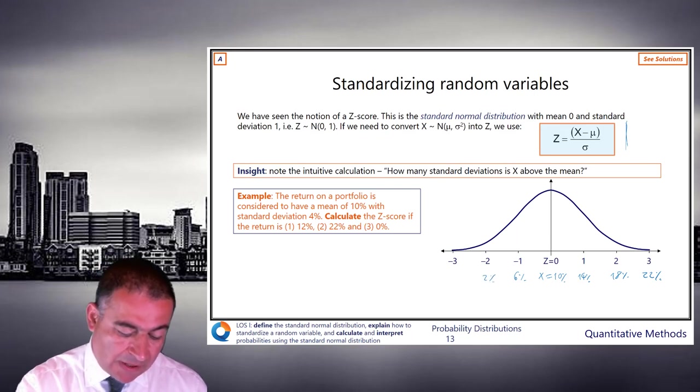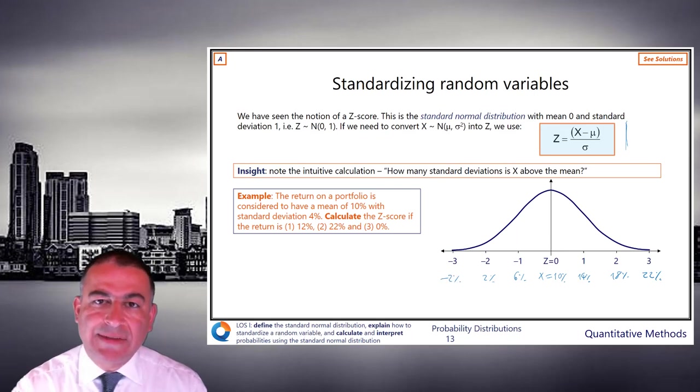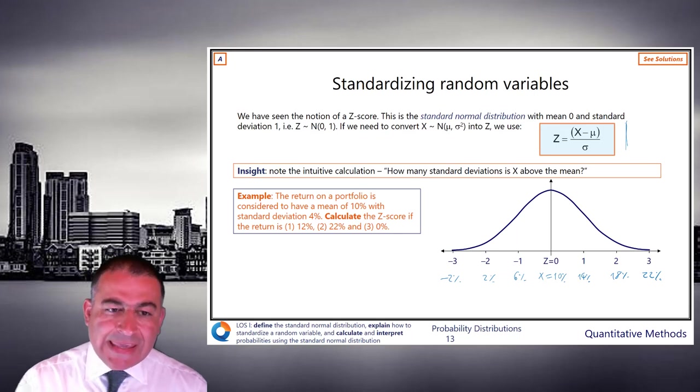Two standard deviations below, we're at 2%. And then minus 3 is equivalent to minus 2, where we are 3, lots of 4, less than 10.